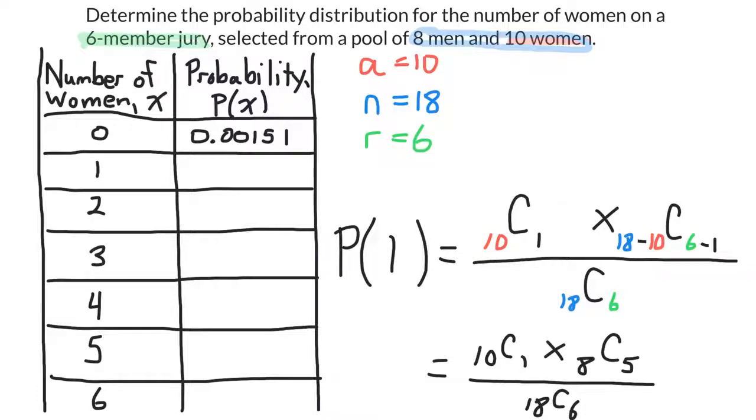Now I can do the same process to figure out the probability that one woman is selected. And I end up with 0.03017 as my probability.